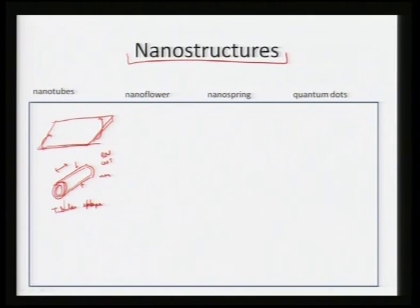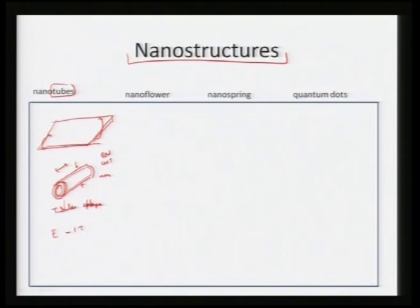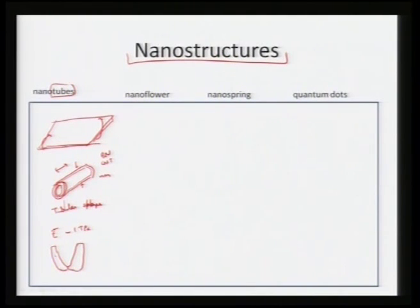Nanotubes have a hollow structure — that is the reason for the term 'tube.' The importance of carbon nanotubes is that they have very high modulus on the order of about 1 TPa, very high bending strength or fracture strength, and can even bend without breaking. They can bend to a very large extent without fracturing. When the diameter of these tubes is around a couple of nanometers, we call them nanotubes.